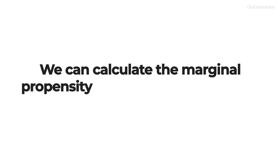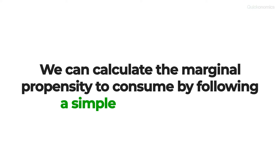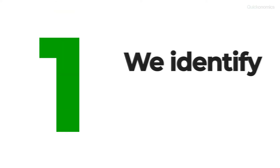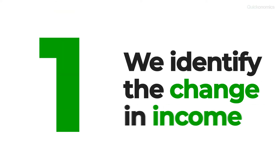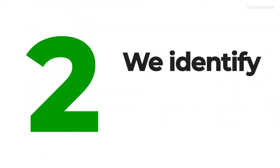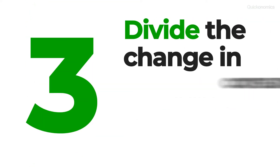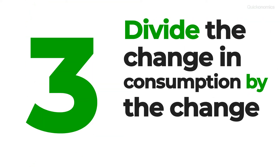We can calculate the marginal propensity to consume by following a simple three-step process. First, we identify the change in income. Second, we identify the change in consumption. Third, we divide the change in consumption by the change in income.